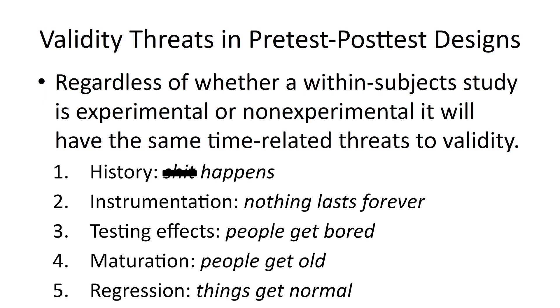Then there's a fifth threat that's not very easy to explain — a statistical phenomenon called regression to the mean. If you measure people enough times, eventually things are going to balance out and become more average. The whole idea is you don't want to just keep testing people indefinitely, because that would kind of defeat the point.